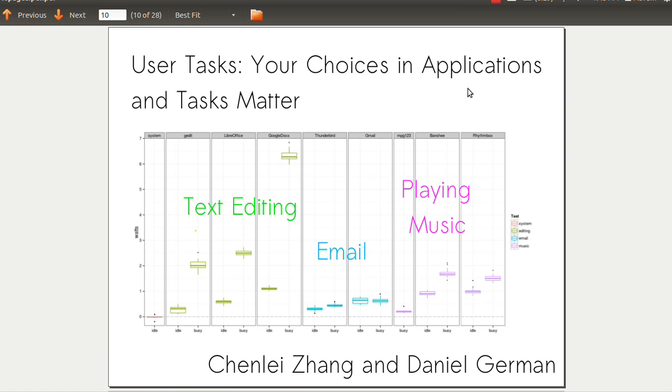In the first column here, we've got text editing - G-Edit, LibreOffice, and Google Docs. If we look at their maximums, G-Edit uses less than LibreOffice, which uses less than Google Docs. For email, we've got Thunderbird versus Gmail. For music playing, two different music players. Different players have different properties in terms of power.